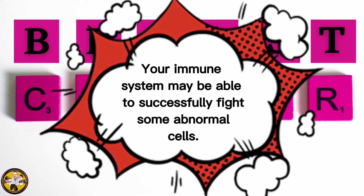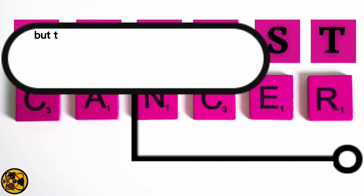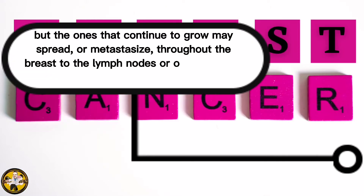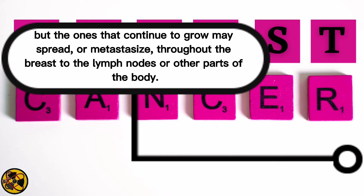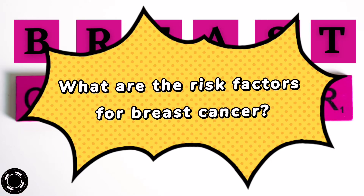Your immune system may be able to successfully fight some abnormal cells, but the ones that continue to grow may spread or metastasize throughout the breast, to the lymph nodes, or other parts of the body. When breast cancer spreads, the malignant tumors it causes in other places are still referred to as breast cancer.